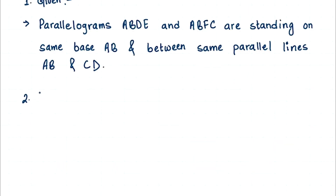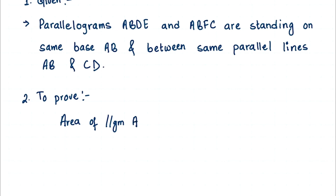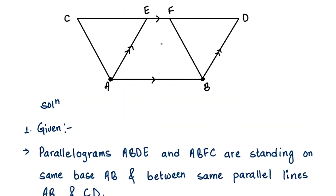The second thing we write is what we need to prove. These two parallelograms are standing on the same base between the same parallel lines — what we need to prove is that the areas of these two parallelograms are equal. So we need to prove: area of parallelogram ABDE is equal to the area of parallelogram ABFC.